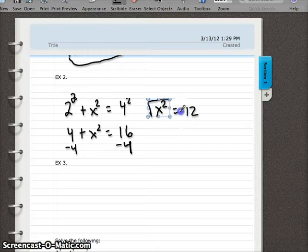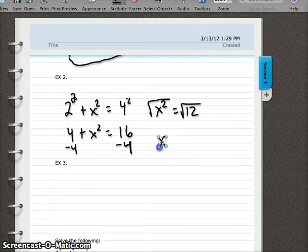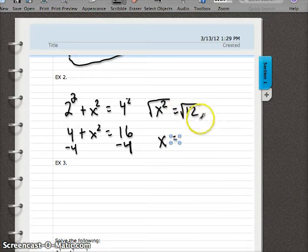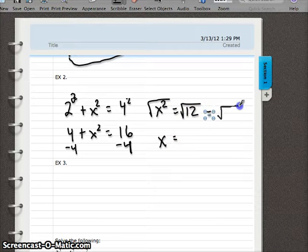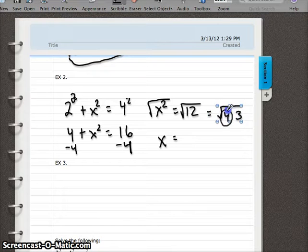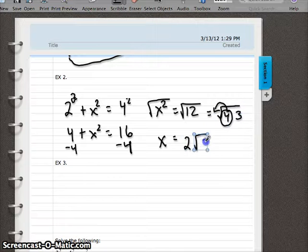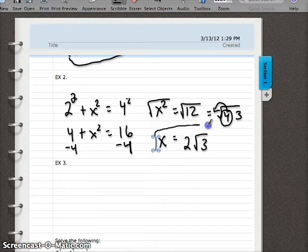And now if we square root both sides to get rid of that square, then we're left with x equals the square root of 12. And we've got to simplify that, so factor it down. That's the same as 4 times 3. And we take the square root of 4 out. And so we've got 2 on the front, and we still have radical 3. Or 2 times the square root of 3 is our final answer.